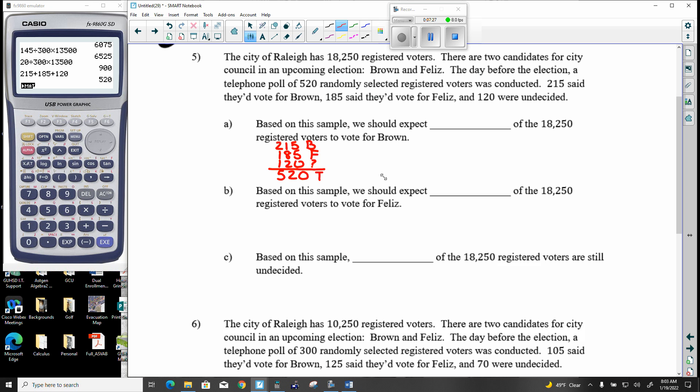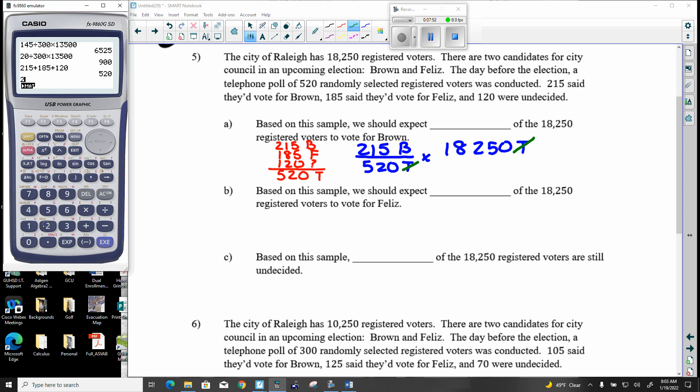So now how many of those 18,250 are going to vote for Brown? So right now I know that 215 out of 520. So I apply that to a bigger total than the 520 and see what that proportion would be. So here we're going to be coming up with a decimal answer. And so 7,545.67 ish. So take that to the whole person. So I see that this would round up. So 7,546 would be my official answer on that.